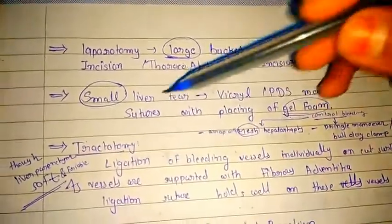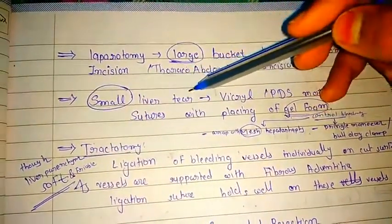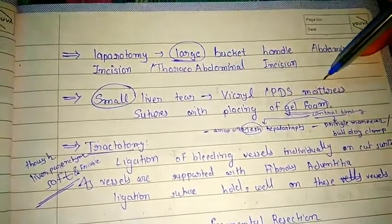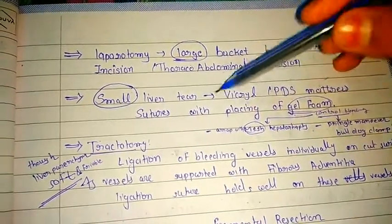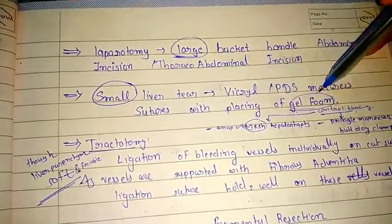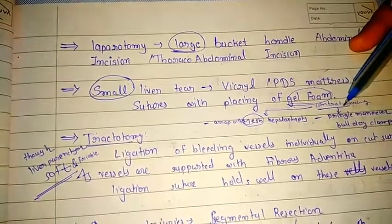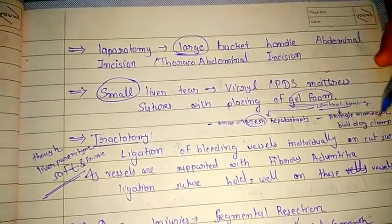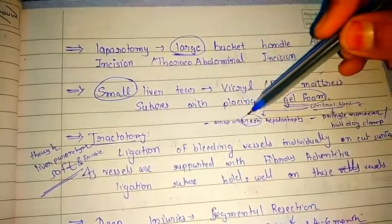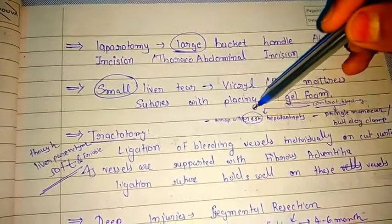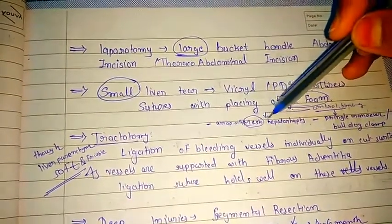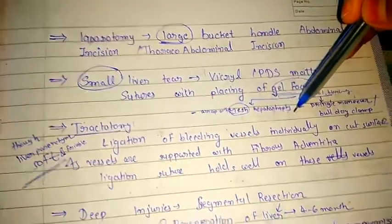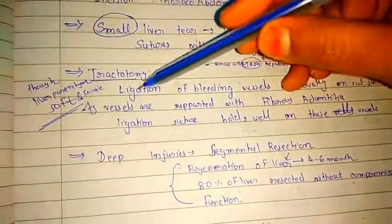For small liver tears, Vicryl or PDS mattress suture is used with placement of gel foam for control of bleeding. Bleeding can be controlled with the Pringle manoeuvre, bulldog clamp, or wrapping with a mesh — which is called mesh hepatorrhaphy — and tractotomy.